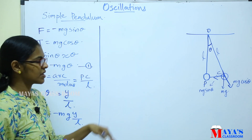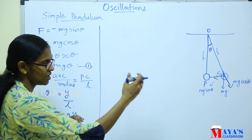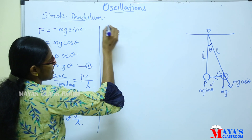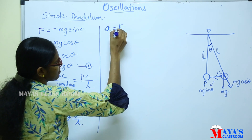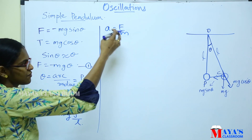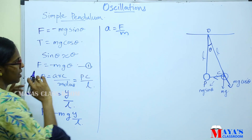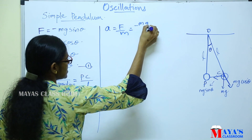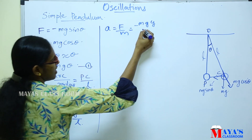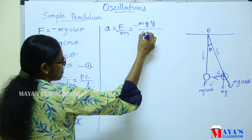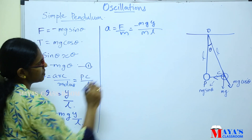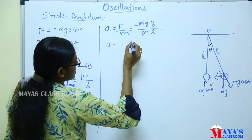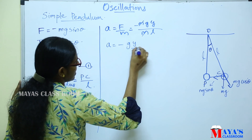We will consider the acceleration of the bob towards the equilibrium position for the to-and-fro motion. Acceleration equals F/m. Substituting the restoring force: F equals minus mg·y/L, then dividing by m, the m cancels. Therefore, acceleration equals minus g·y/L.